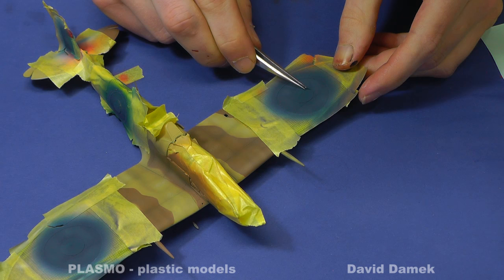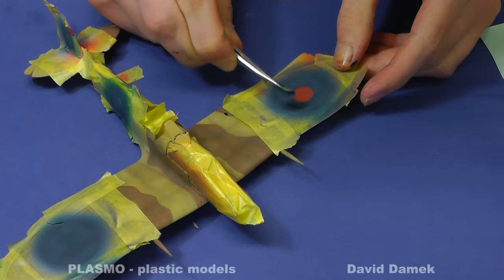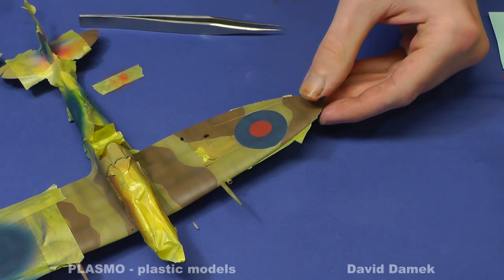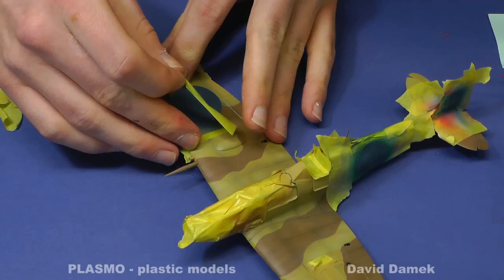Now I only remove the stencils and it is done. Many times I have seen someone remove the underneath paint too. Why does this happen? Simply because they poorly degrease the model surface before spraying. Therefore I always wash the model in soapy water first. In addition, you should stick the stencil after you spray the model with glossy varnish, which also helps to prevent paint peeling.